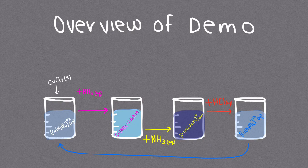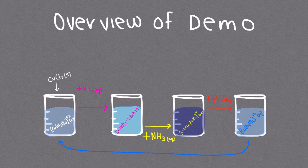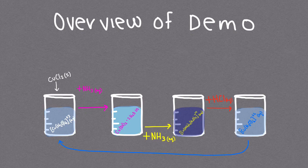Now here's a simplified overview of what we covered so far. First we added solid CuCl2 to water to form a copper ion solution. Then we added ammonia until it formed a copper hydroxide precipitate. Then we added more ammonia until it formed a copper ammonia complex. Then we added HCl until it reverted back to its original state.